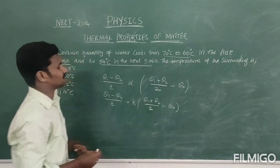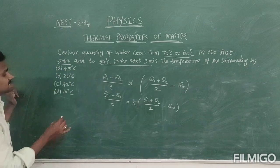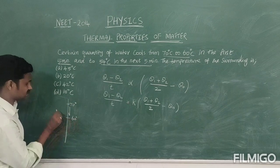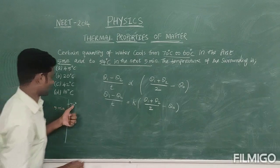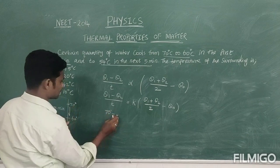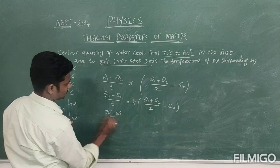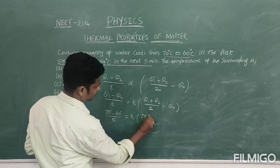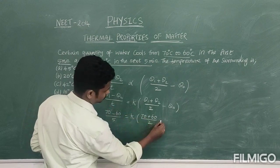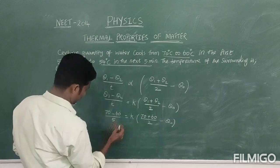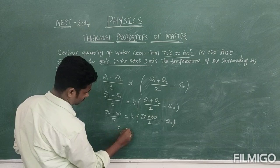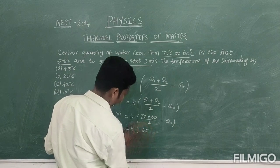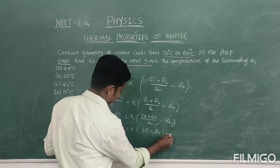First, observe the first case: temperature reduces from 70 degrees Celsius to 60 degrees Celsius. It starts at 70°C and falls to 60°C in 5 minutes. So we calculate: (70 − 60) / 5 = K × [(70 + 60)/2 − θ₀]. That gives us 10/5 = 2 = K × (65 − θ₀). This is equation number 1.